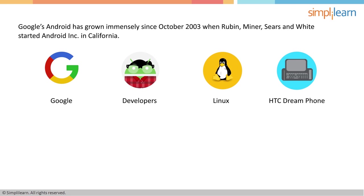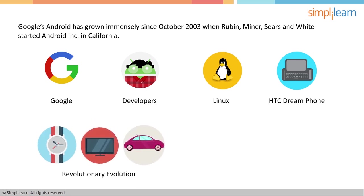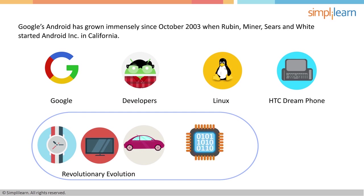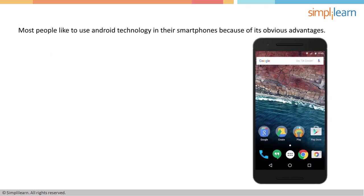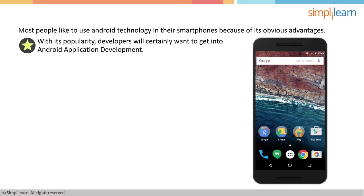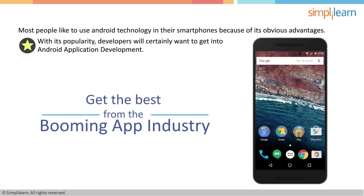What next? Ask Google, the developers, the makers of devices. Now that the OS is stable, where do we go from here? Android, which started with smartphones, is now in smartwatches, TVs, and cars — proven to run on every gadget with a small microprocessor. The number of apps available in the Google Play Store crossed 1.6 million as per July 2015 stats, clearly showing its market penetration. With its unbelievable popularity, developers will certainly want to get into Android application development to a greater extent and get the best from the booming app industry.